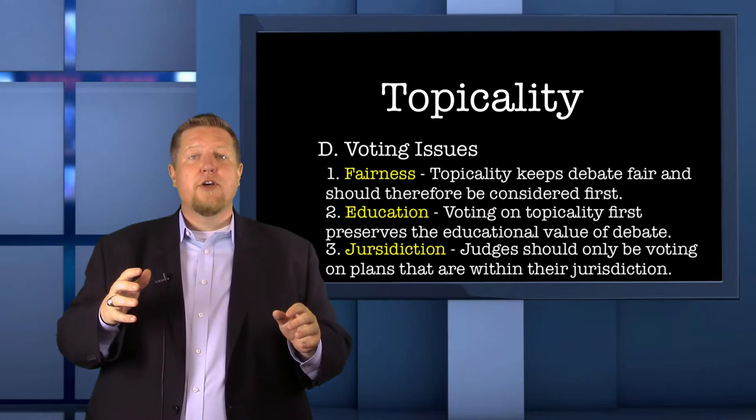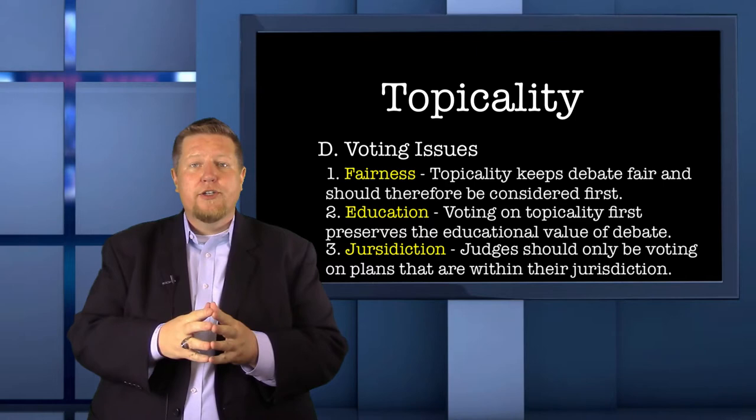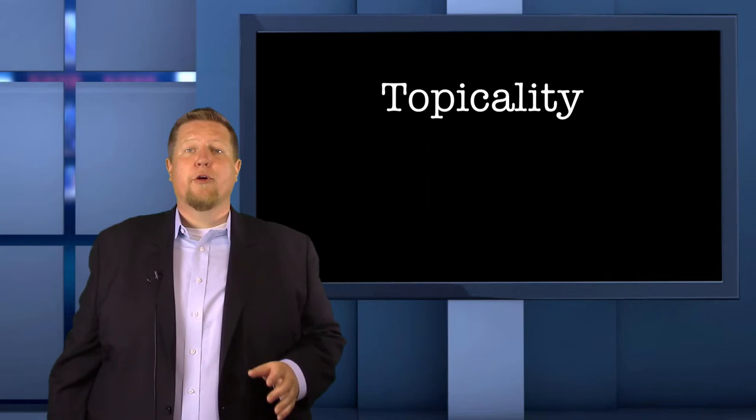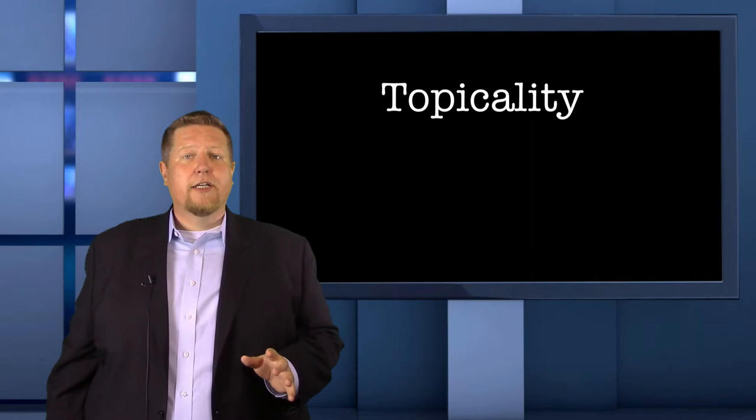The third and final voter is jurisdiction, which means the judge should only consider affirmative plans within his or her jurisdiction — and the judge's jurisdiction is defined by the words in the resolution. Therefore, the judge should reject any plan that falls outside of the resolution. So those are the four sub-points of a topicality argument: interpretation, violation, standards, and voters.